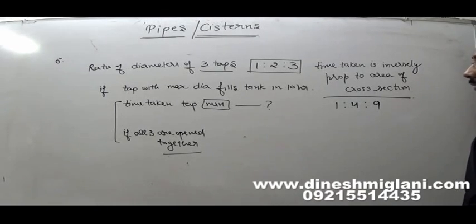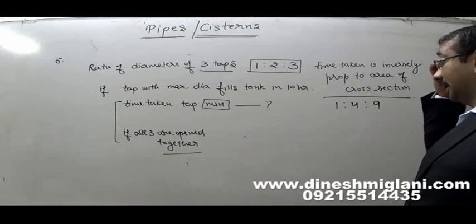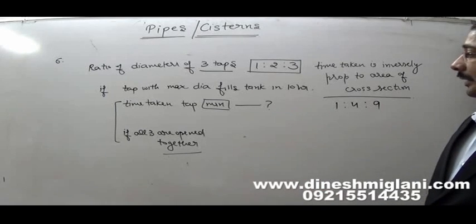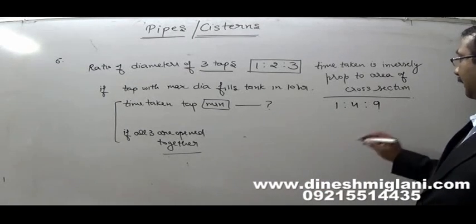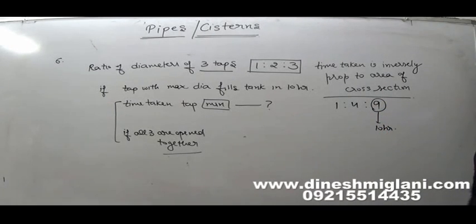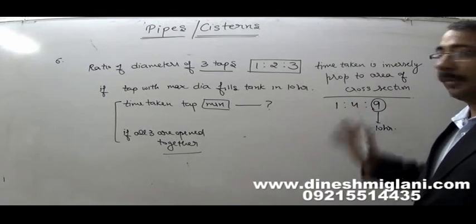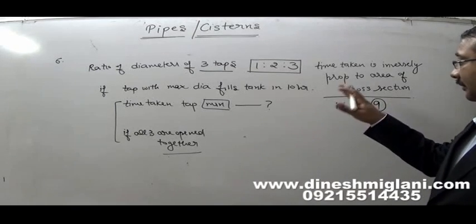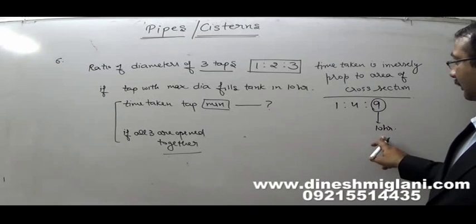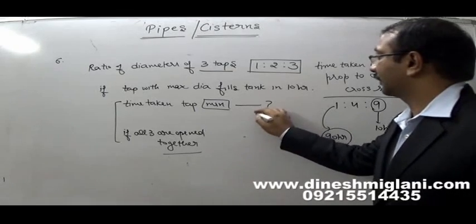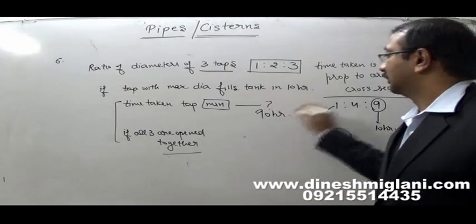The tap with maximum diameter has area ratio 9 and takes 10 hours. Since time is inversely proportional to area, if area is 9 it takes 10 hours, so if area is 1 it takes 90 hours. Therefore the tap with minimum diameter takes 90 hours. That is the answer to the first question.